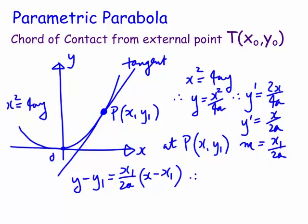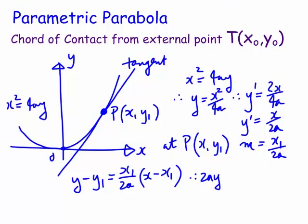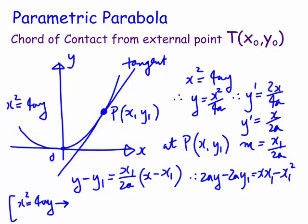We multiply everything by 2a. We get 2ay minus 2ay1 equals xx1 minus x1 squared. Now, we have to do a little trick here: because x1 squared, since x squared equals 4ay and the point (x1, y1) lies on it, x1 squared is actually equal to 4ay1. So we just substitute x1 squared as 4ay1.